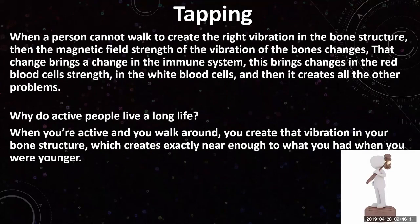When a person cannot walk to create the right vibration in the bone structure, the magnetic field strength of the vibration of the bone changes. That change brings about the change in the immune system and starts creating all sorts of long-term health problems. As we've seen, people that live a very active life tend to live a very long life and are quite healthy. It's just the simple effect that they are helping their body to create a healthy immune system.